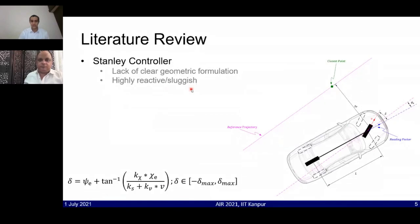Secondly, it is a highly reactive or sluggish controller since it uses a closest point on the reference trajectory as opposed to a lookahead point. If we consider that the initial cross-track error is high, then the vehicle is bound to move very suddenly towards the reference trajectory due to the highly erratic control commands. This is not at all desired, so the authors propose a softening coefficient in the denominator.